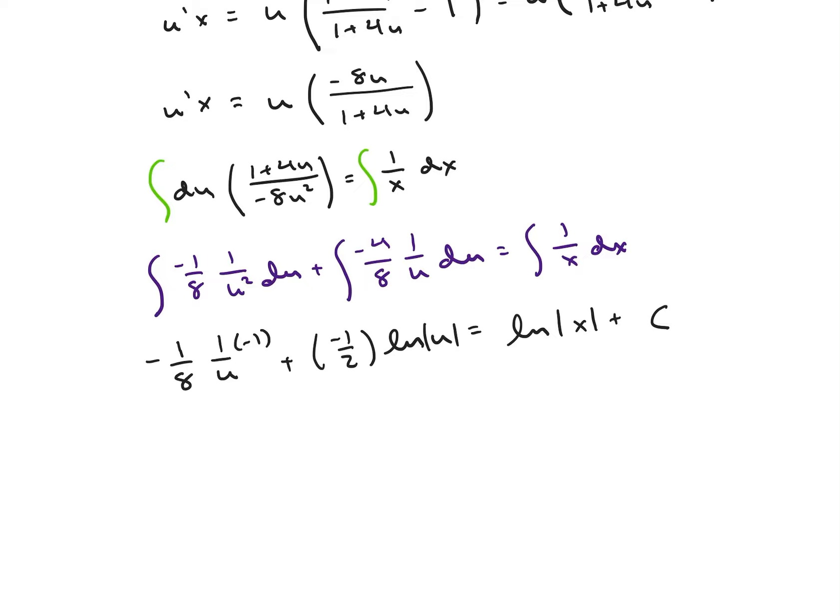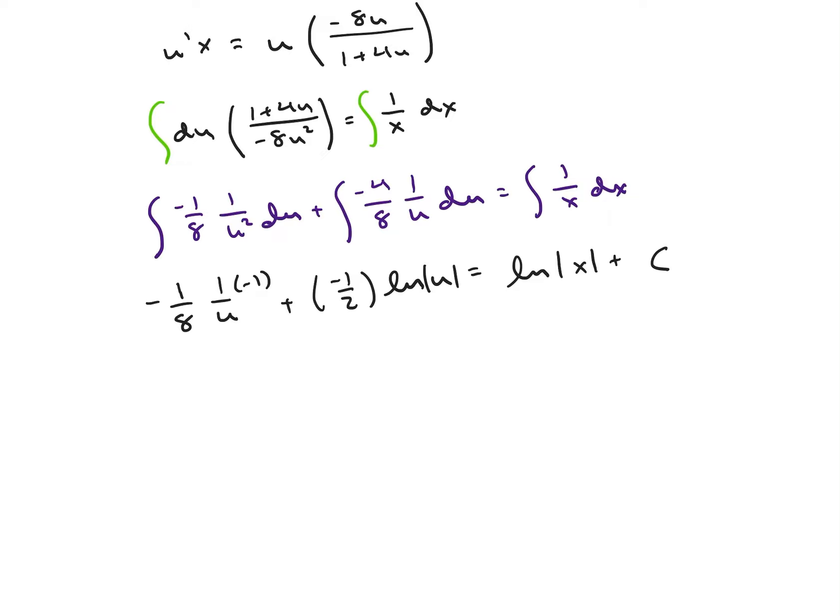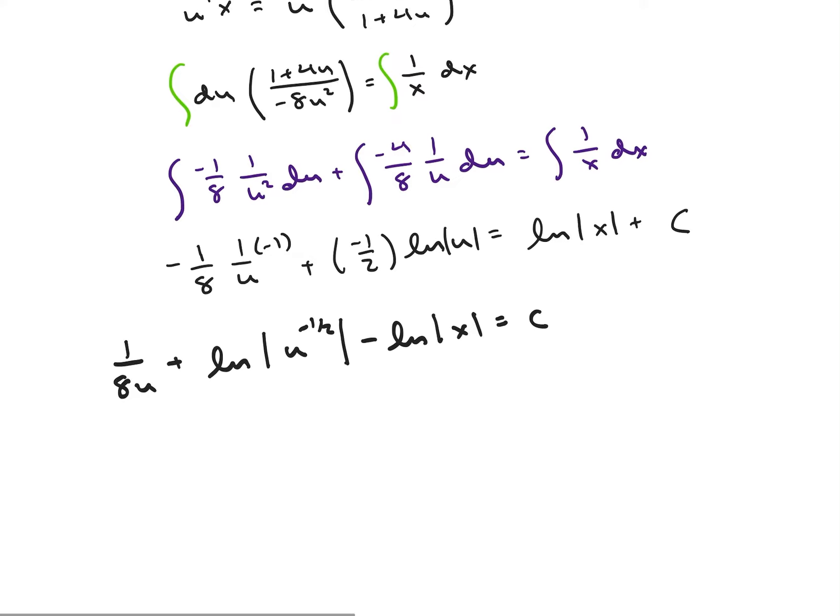All right, so my question wanted my solution in terms of an arbitrary constant. So let's move everything over to the same side over here. So I'm going to get 1 over 8u plus ln of u to the negative 1 half. Remember our logarithm rules. Minus ln of x equals to that constant.